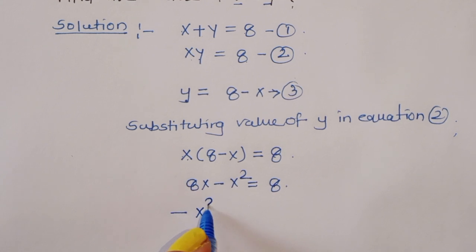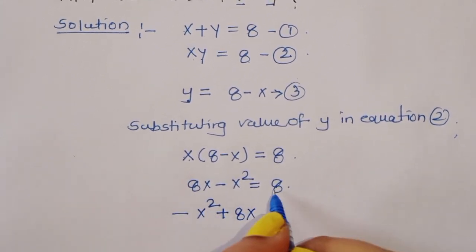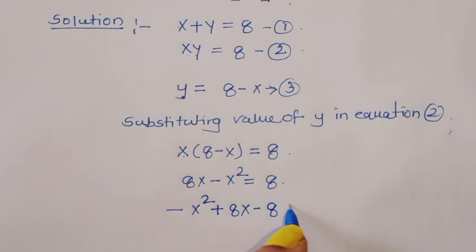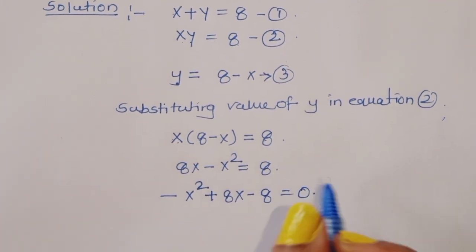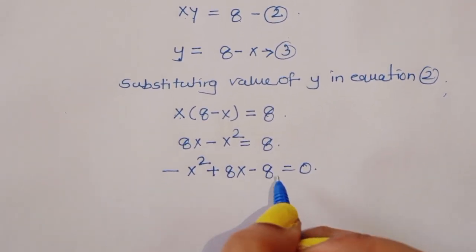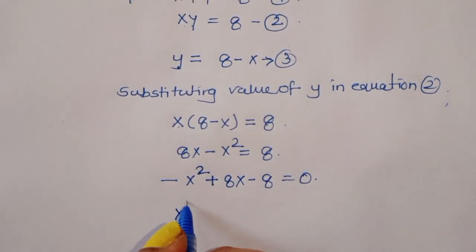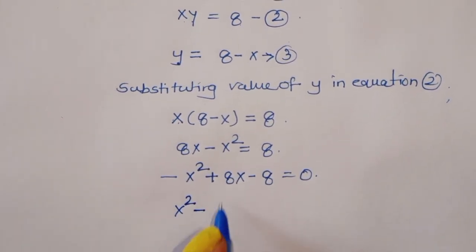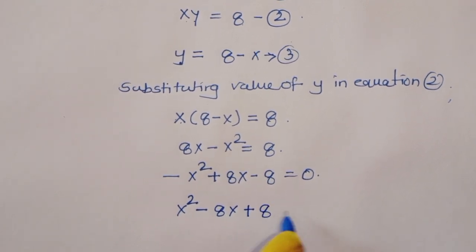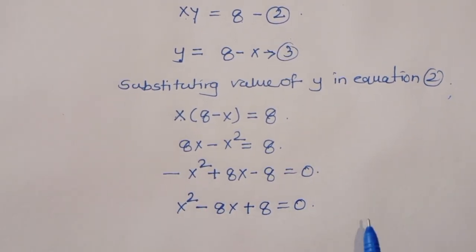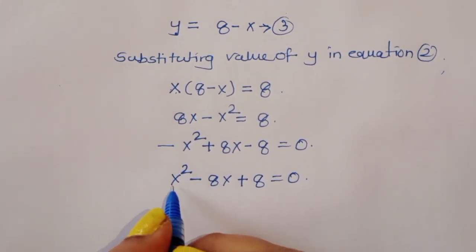We can write: minus x squared plus 8x minus 8 is equal to 0. Multiplying through by minus 1, we get x squared minus 8x plus 8 is equal to 0.